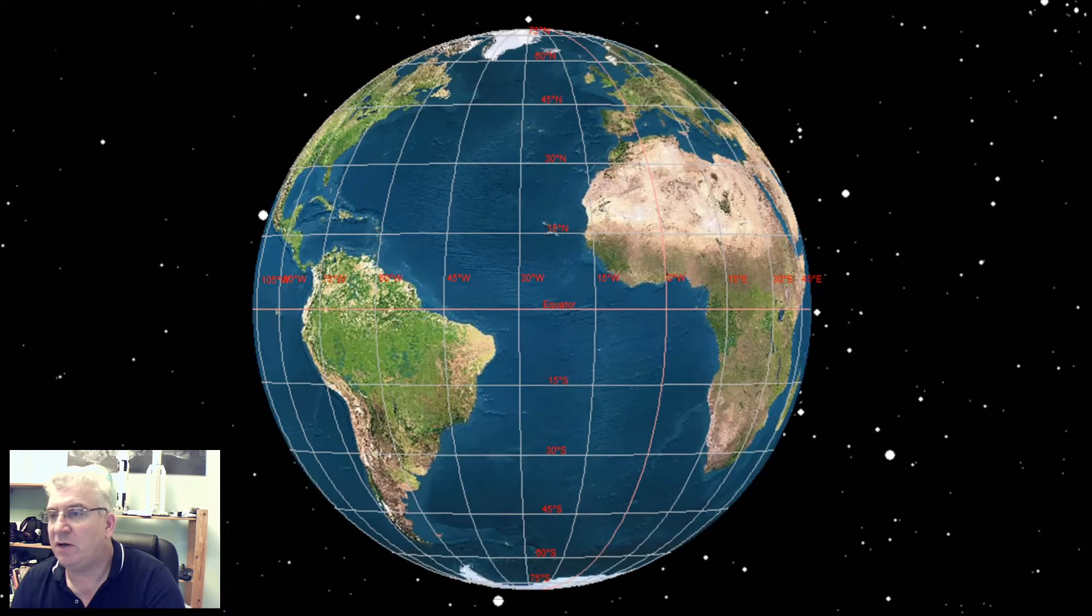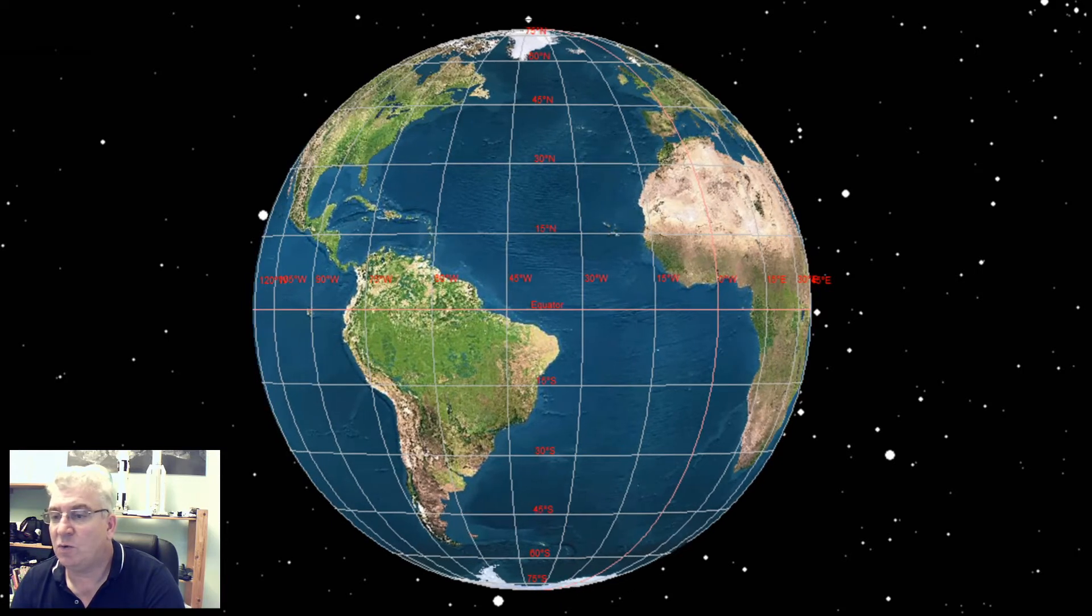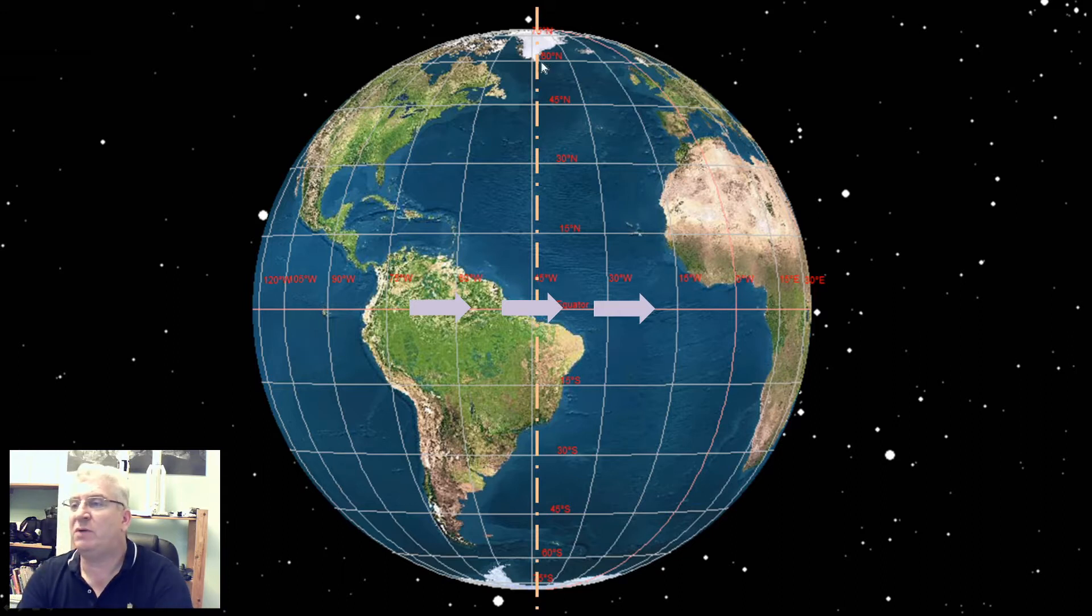The Earth has an axis that it rotates about. We call that the Earth's rotational axis, shown by this dotted line or dashed line here. The arrow is showing the direction of rotation.